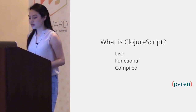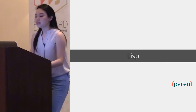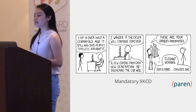Now I'm going to talk about why these characteristics make ClojureScript a compelling choice for front-end development. When you think about Lisp, the first thing you will probably think about is parentheses. Lisp has been with us for a long time. In fact, it is the second oldest high-level programming language, just a year shy from Fortran. But yet, people are still using it today.